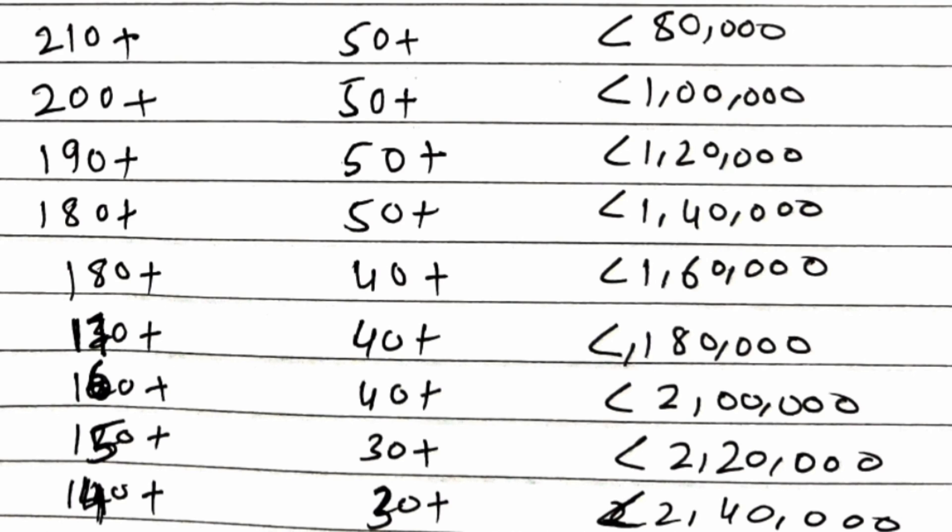So 30 plus marks in KCET and 140 plus marks in boards, this will be the lower combination. You can expect rank around 240,000.